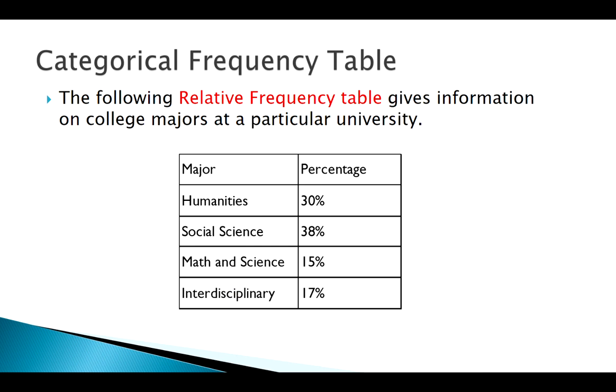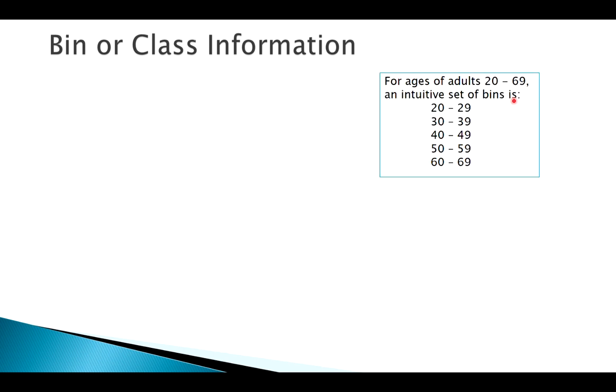So say I had a list of people's ages, age 20 to age 69, whatever. Well here there would be a nice, neat, intuitive way of dividing those up: 20 year olds, 30 year olds, 40 year olds, and so on. Now it's not always going to be like this. With quantitative data, we're not always going to have such a nice, neat way to divide things up like this, but let's just say, to define a few things, that we do have an easy way to do it here.